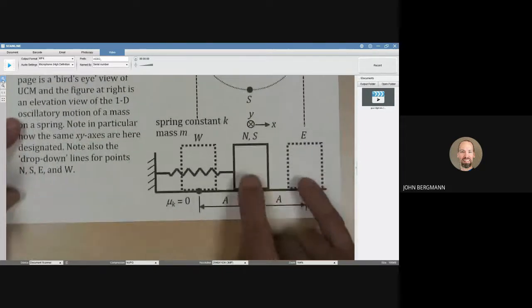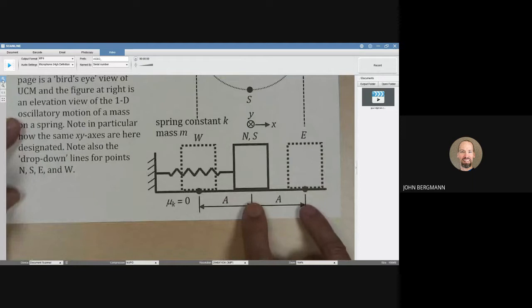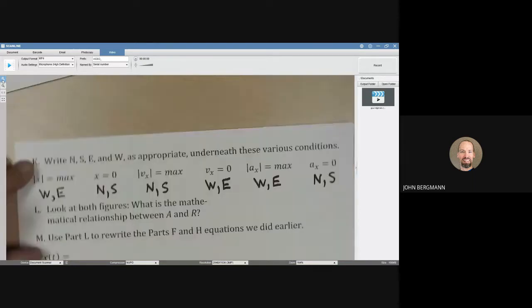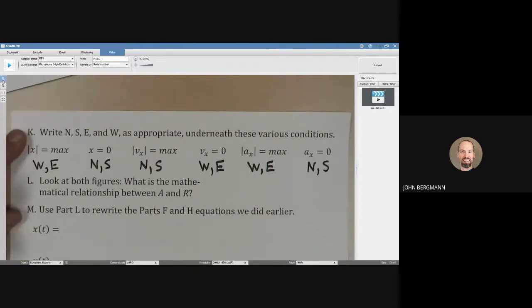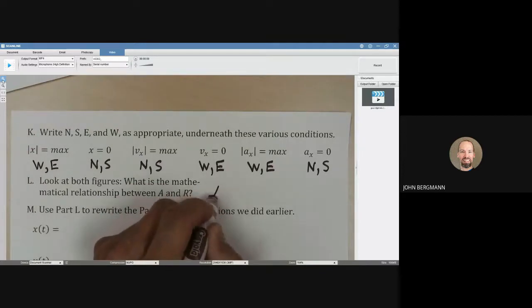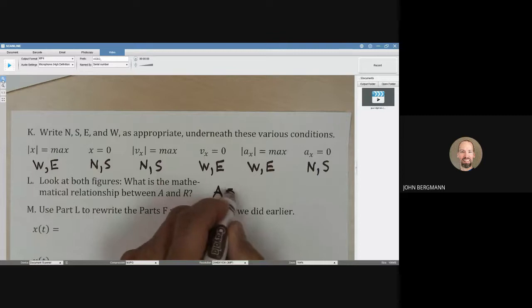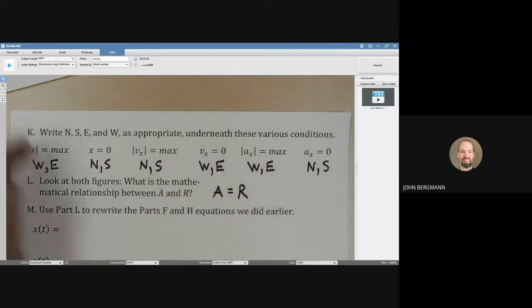And if I move down, that's the distance right there. So what's the mathematical relationship between A and R? The amplitude of the simple harmonic motion, the mass on a spring, is equal to the radius of uniform circular motion, something going in a circle.